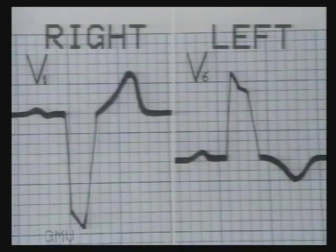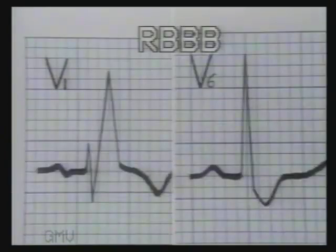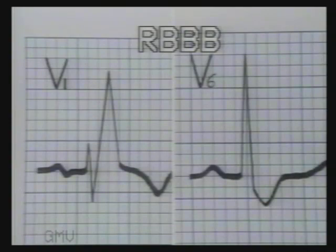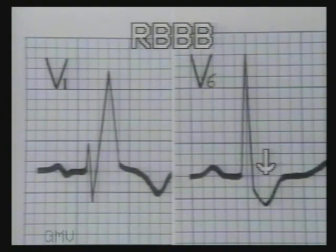At the same time, the opposite chest leads will display a wide and slurred S-wave. The features of right bundle branch block are: wide QRS complexes 3 mm or more wide, an RSR' pattern also called as M-pattern or rabbit ears in lead V1, and broad slurred S-wave in leads V5 and V6.